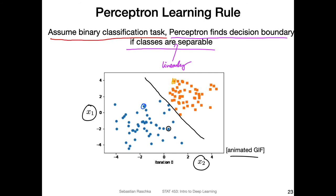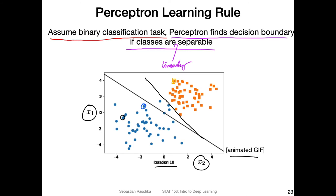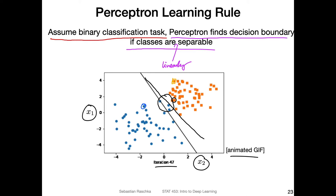I made an animated GIF showing how the perceptron goes about finding the decision boundary, starting at a random place and updating the rule each iteration. The circle shown indicates which data point it currently looks at — it moves around because the dataset is shuffled. It looks at one training example at a time, and if it finds a misclassification it moves the decision boundary.